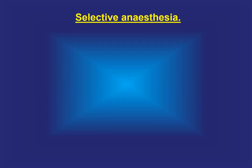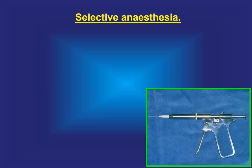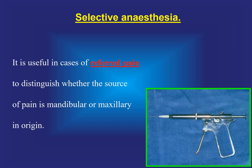Selective anesthesia: whenever we have referred pain, to distinguish whether the source is mandibular or maxillary in origin, we administer anesthesia to the area of suspected pain. If the pain resolves, the cause is in that region; if it does not resolve, we have referred pain.